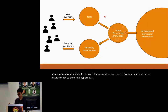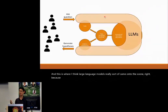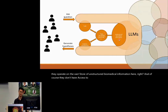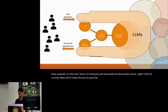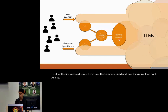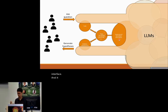This is where large language models really came onto the scene, because to some extent they skip the structured part and operate on the vast store of unstructured biomedical information — and, of course, all the unstructured content in the common crawl. ChatGPT was the first large language model with a generally accessible chat interface, and it showed a lot of promise, though the first versions had some rough edges.